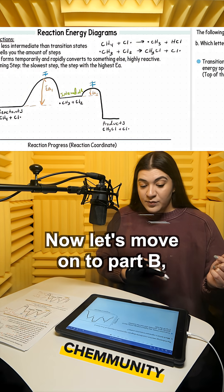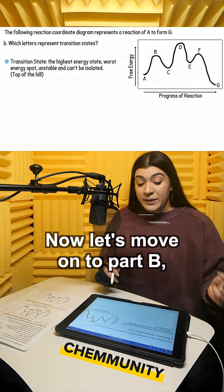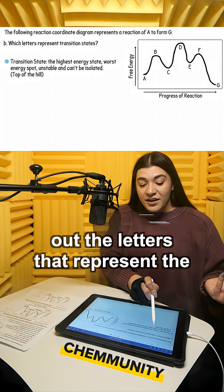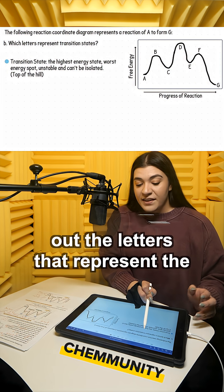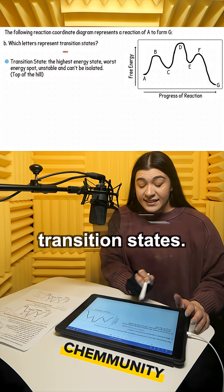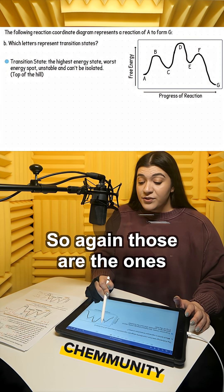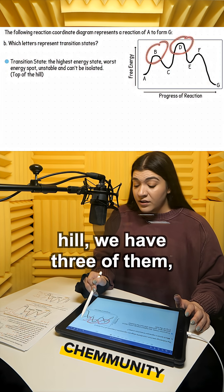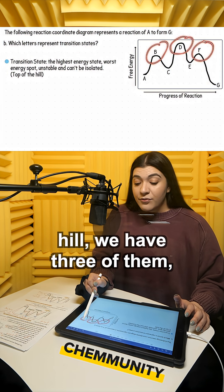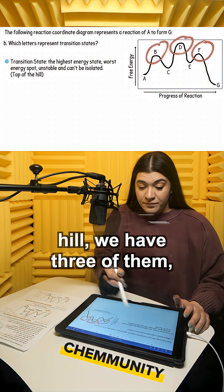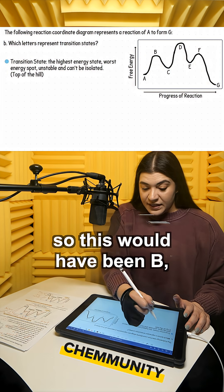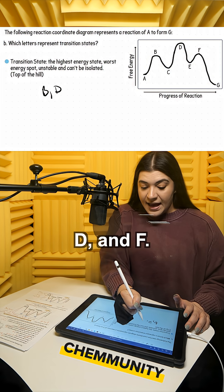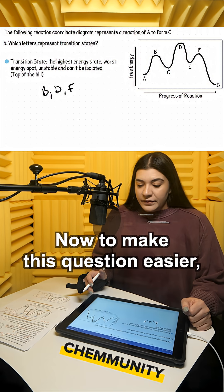Now let's move on to part B, which is asking us to figure out the letters that represent the transition states. Those are the ones that are at the top of the hill. We have three of them: B, D, and F.